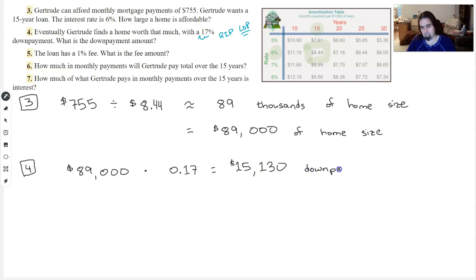The problem doesn't ask us at this point what the actual loan is, but I do want to figure that out. So I will say also, anything that's not down payment is going to be loan. So we have to take away the down payment we just found.